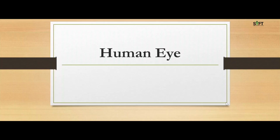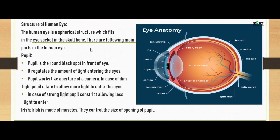We are going to study an interesting chapter, i.e., human eye. Human eye is an organ that reacts with light and allows light perception, color vision and depth perception. The eye is made up of a number of parts including the iris, pupil, cornea and retina. The eye has six muscles which control the eye movement, all providing different tension and torque.